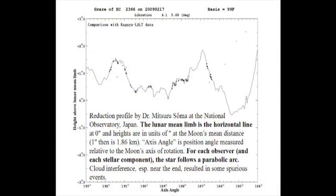This shows the predicted profile generated by the Kegelia data with all the observations, and most of these are the secondary star. This is the primary star. In this particular profile, the moon's mean limb is a straight line. For each component, the star's path is a parabolic arc that comes down and then back up again. You can see the very good detail and the comparison we get with the modern profiles.